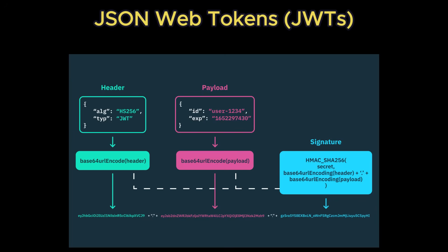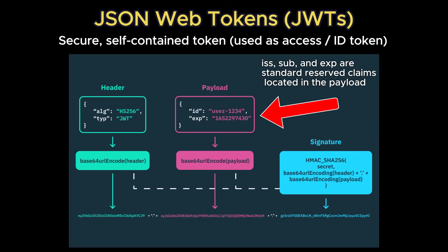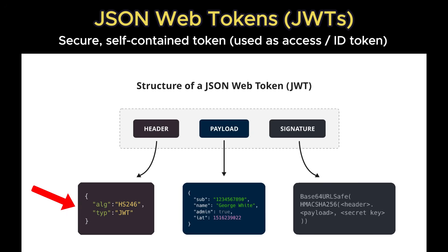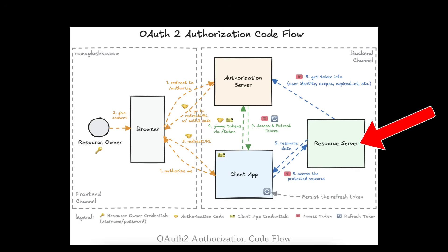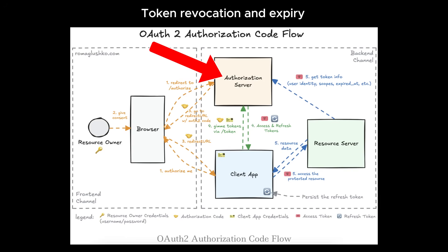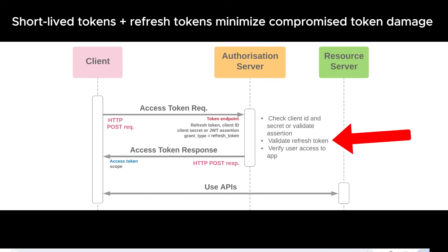OAuth tokens themselves are usually JSON web tokens, or JWTs — digitally signed, compact data structures that encode information like the issuer, the subject, expiry time, and granted scopes. A JWT consists of three parts: a header specifying the algorithm and token type, a payload with the claims, and a signature used to verify the integrity of the token. Since JWTs are self-contained, resource servers can validate them without contacting the authorization server, which improves performance. However, this also introduces considerations around token revocation and expiry, since once issued, JWTs remain valid until they expire. This is why refresh tokens and short token lifetimes are used to balance convenience with security.